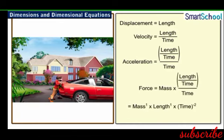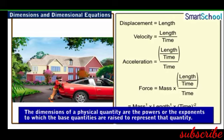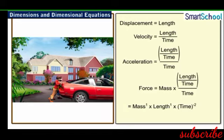From the expression for force, it is clear that the exponents of mass, length, and time are 1, 1, and −2 respectively. These exponents of base quantities in the expression for force are called dimensions. Thus, the dimensions of a physical quantity are the powers, or exponents, to which the base quantities are raised to represent that quantity. We say that the dimensions of force are 1 in mass, 1 in length, and −2 in time.